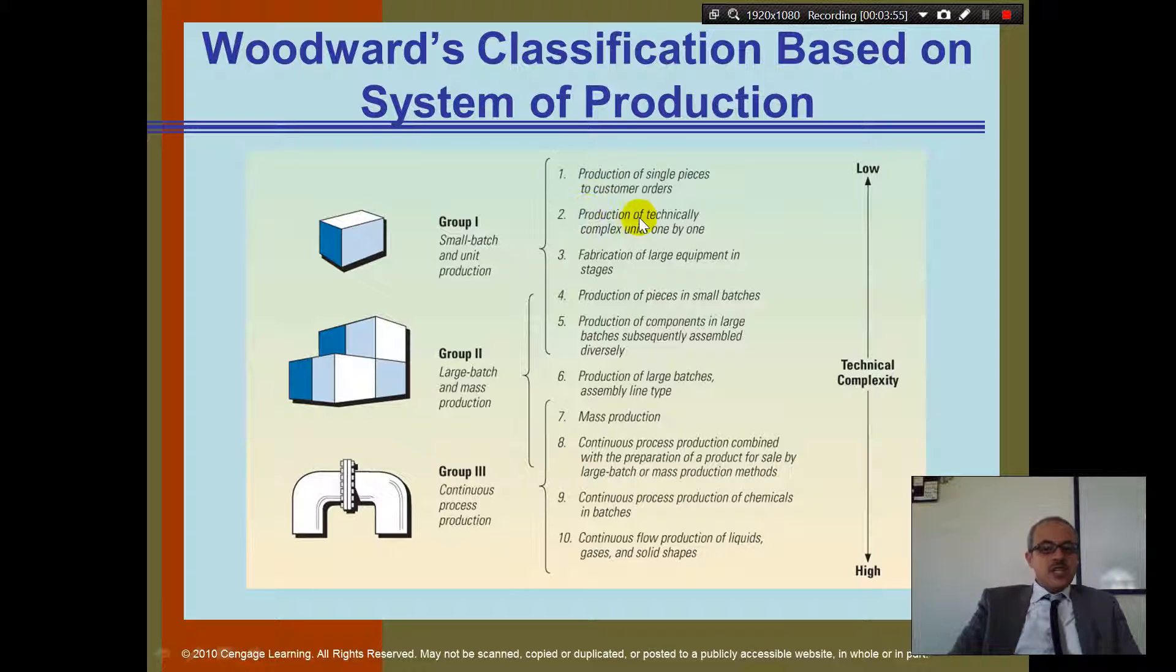Number 2, production of technical complex units one by one. So that's when you produce one for each, as per customer request. Number 3, fabrication of large equipment in stages. So here you need to have maybe equipment that's going to help you for the production of more.